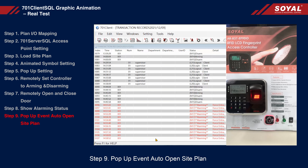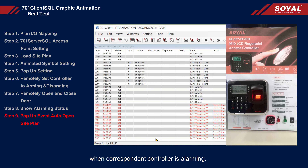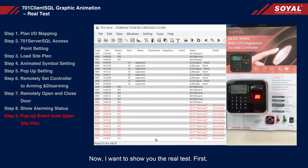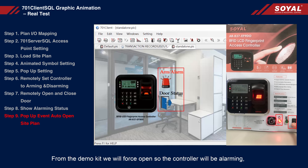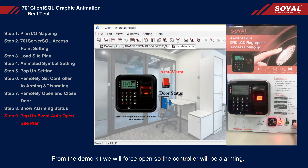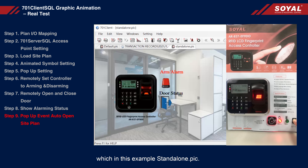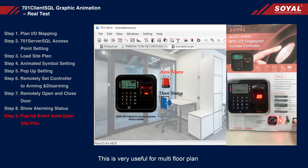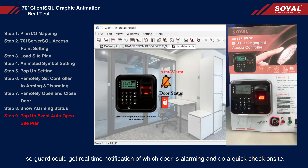Step 9: Pop-up event auto-open site plan. Back in Step 5's pop-up setting, we set the auto-open site plan 'standalone PIC' when the corresponding controller is alarming. Now I want to show you the real test. First, close the site plan and only keep the transaction window open. From the demo kit, we will force open so the controller will be alarming. As you can see, 701 client SQL will automatically open the corresponding site plan — in this example, standalone PIC. This is very useful for multi-floor plans so the guard can get a real-time notification of which floor is alarming and do a quick check on site.